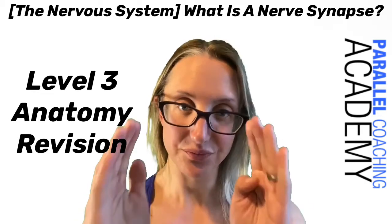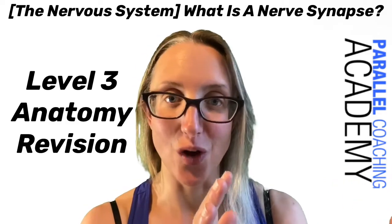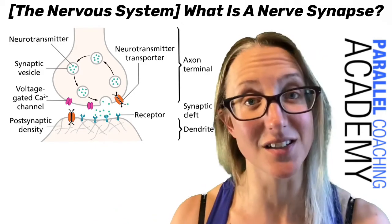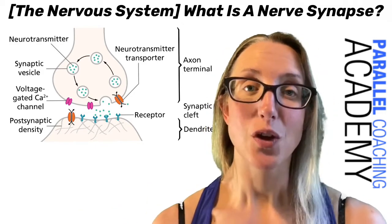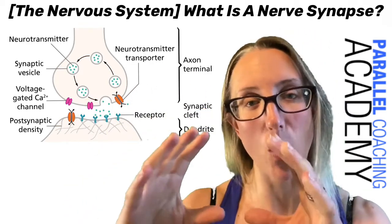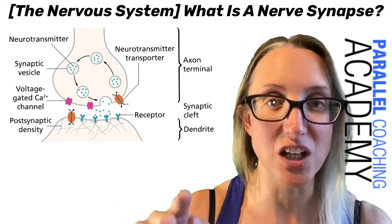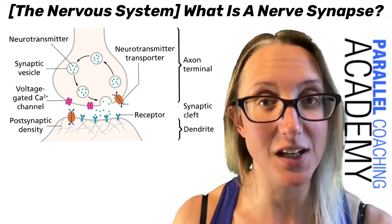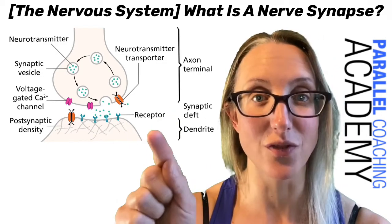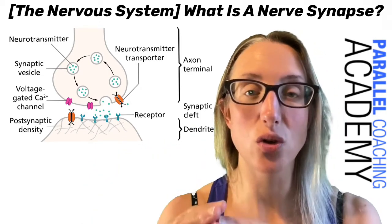At the synapse, you've got the pre-synaptic neuron the signal is coming from and the post-synaptic neuron the signal is going to. There's a bulb shape at the axon terminal — the end point of the first neuron — joining up with a bulb shape for the second neuron. The signal gets sent down through the axon to the axon terminal, where there are little synaptic vesicles containing lots of neurotransmitters.